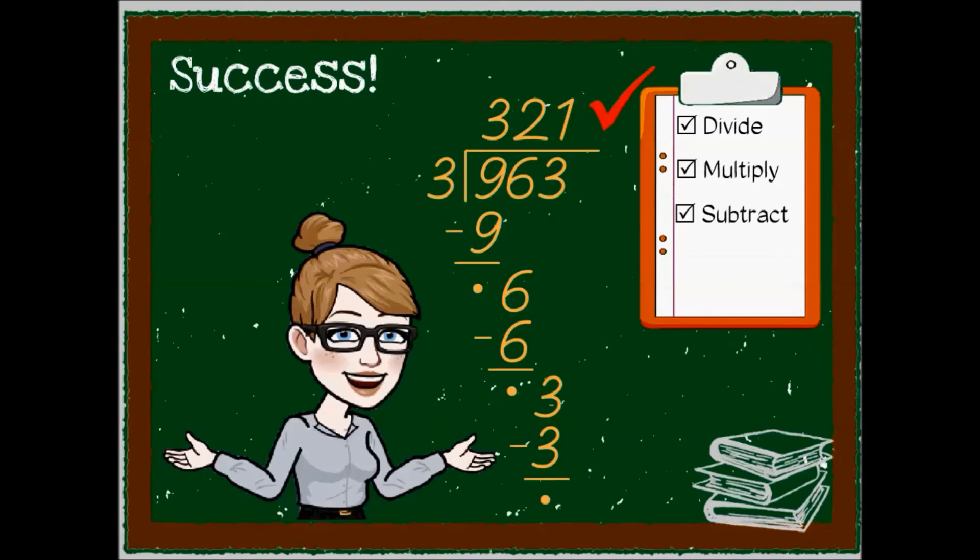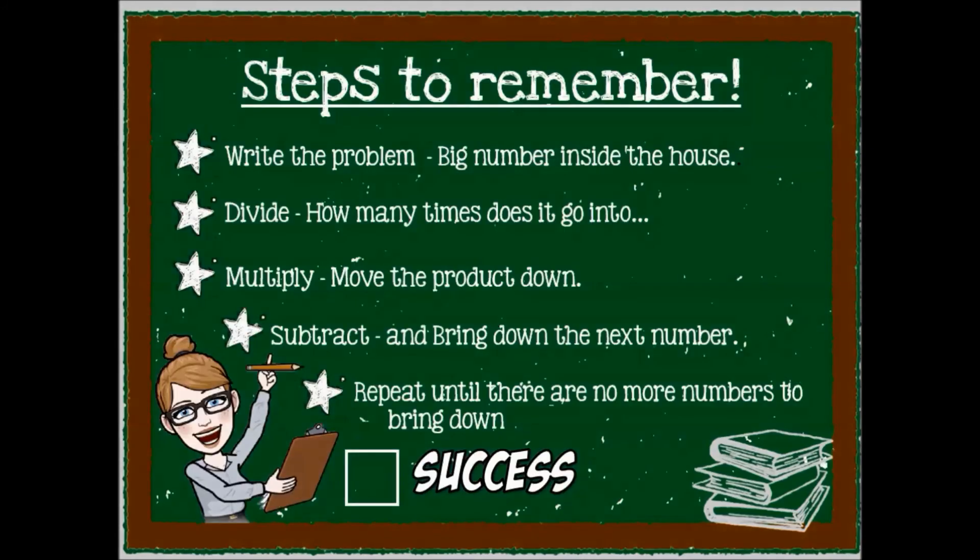With smooth moves, if you want to be an awesome division dervish, start with writing the sum in a little house, then divide first by counting the knocks on the door, multiply from the door to the floor, subtract and bring out the next number for a dance. Keep dancing until there are no more numbers left in the house.